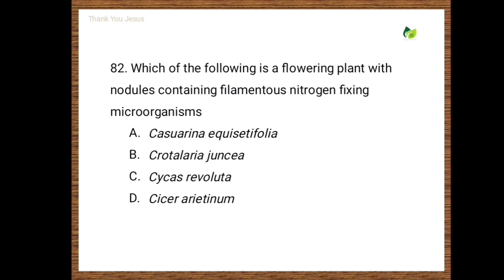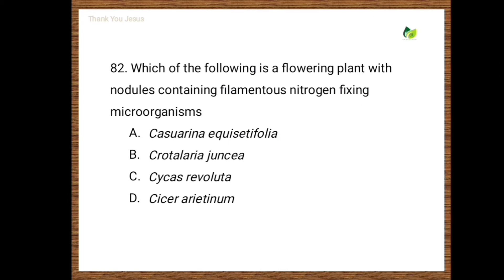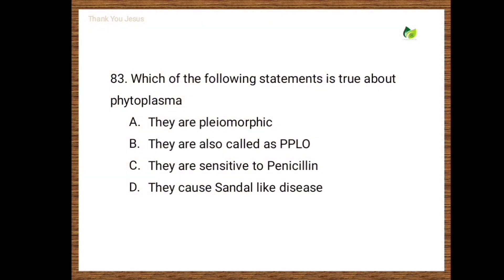Next question: Which of the following is a flowering plant with nodules containing filamentous nitrogen-fixing microorganisms? Options are Casuarina equisetifolia, Crotalaria, Cycas revoluta, Cicer arietinum. The correct option is Casuarina equisetifolia.